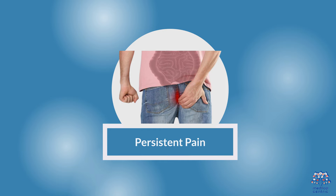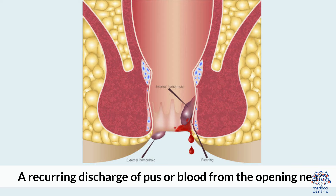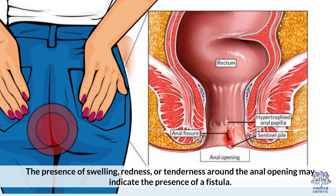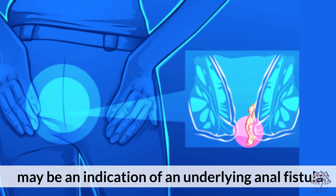Symptoms of Anal Fistula. 1. Persistent pain, which can worsen during bowel movements. 2. Discharge: A recurring discharge of pus or blood from the opening near the anus is another typical sign of an anal fistula. 3. Swelling and Redness: The presence of swelling, redness, or tenderness around the anal opening may indicate the presence of a fistula. 4. Recurrent Abscesses: Frequent development of anal abscesses may be an indication of an underlying anal fistula.